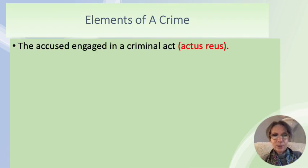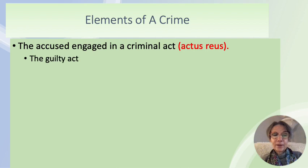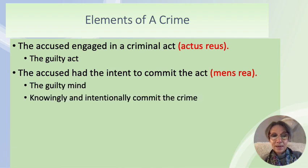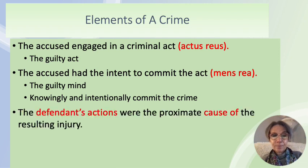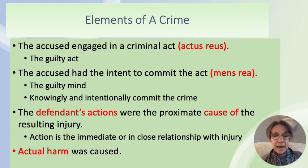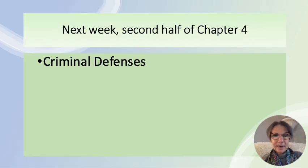To recap, the elements of the crime are: actus reus — the accused engaged in a criminal act; mens rea — the accused had intent and knowingly committed the crime; proximate cause — the defendant's actions were the approximate cause of the resulting injury, in close relationship with it; and actual harm — that harm was caused and it determines what crime the individual is charged with.